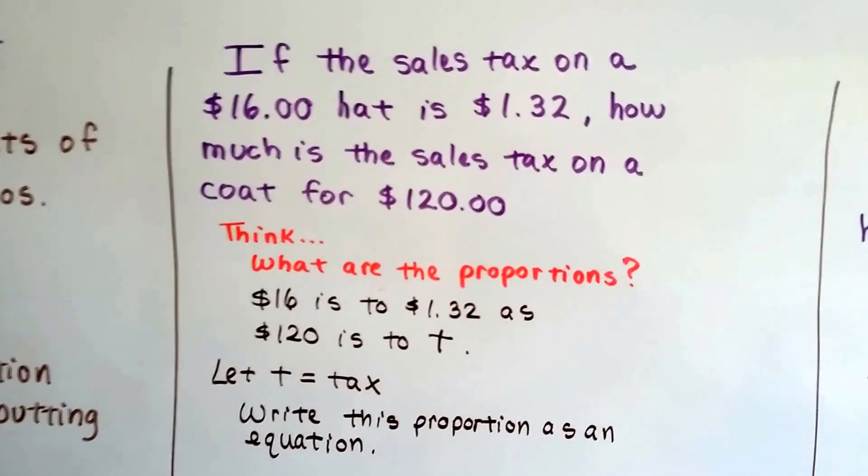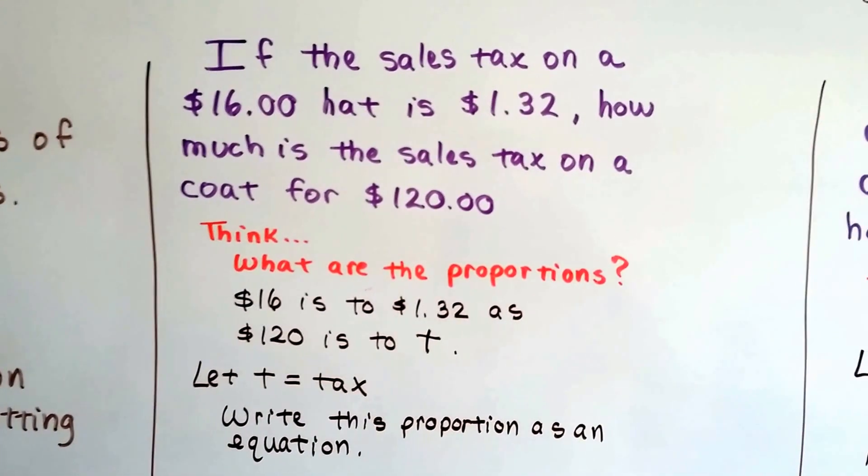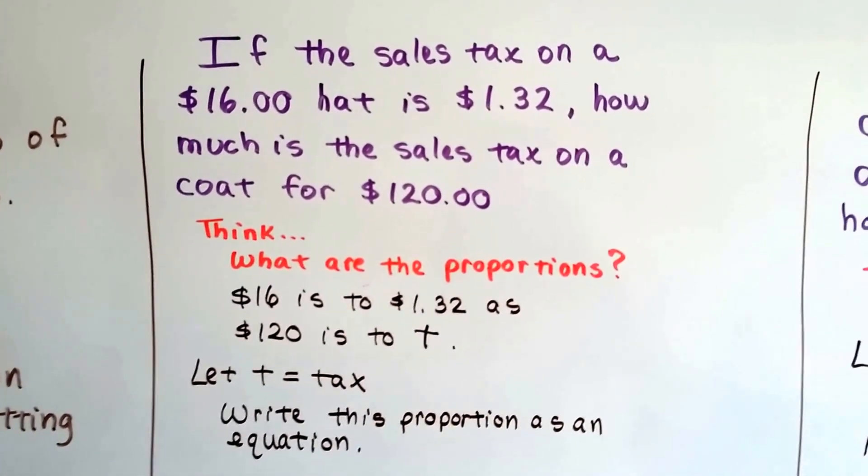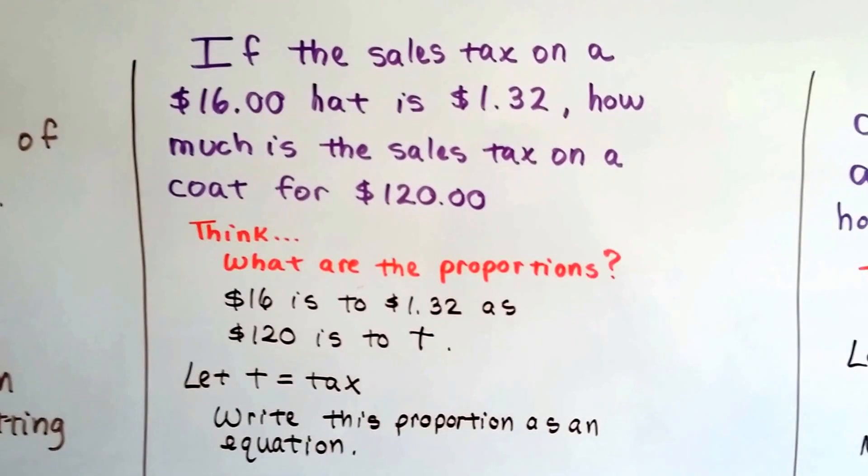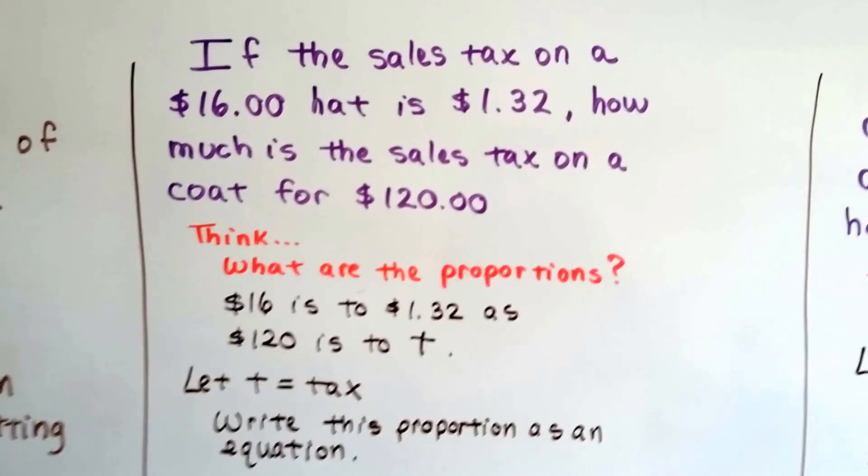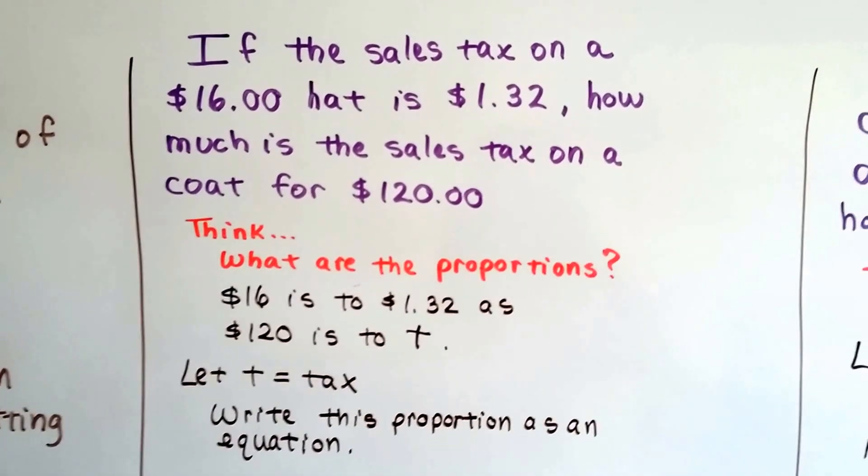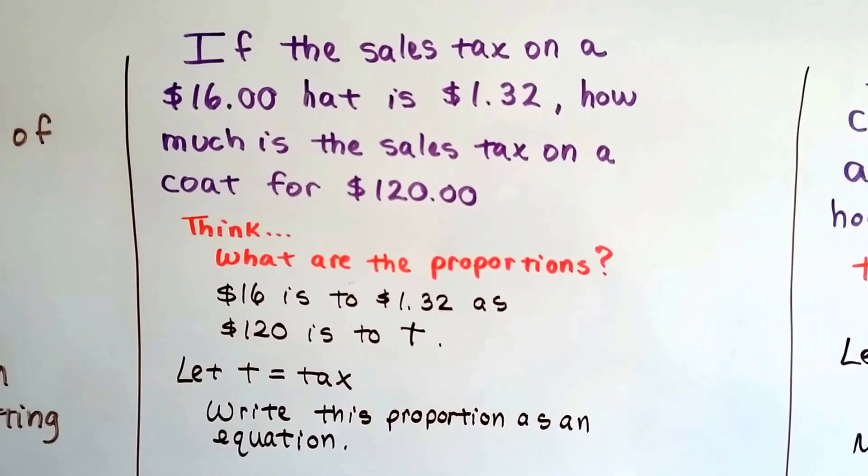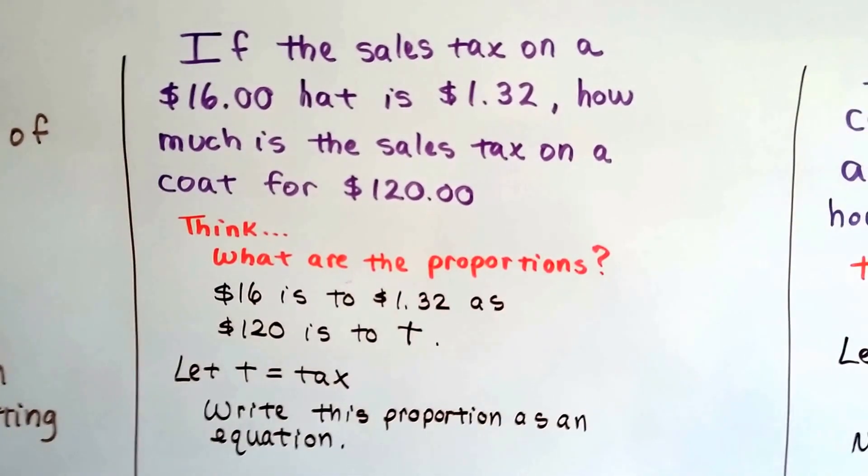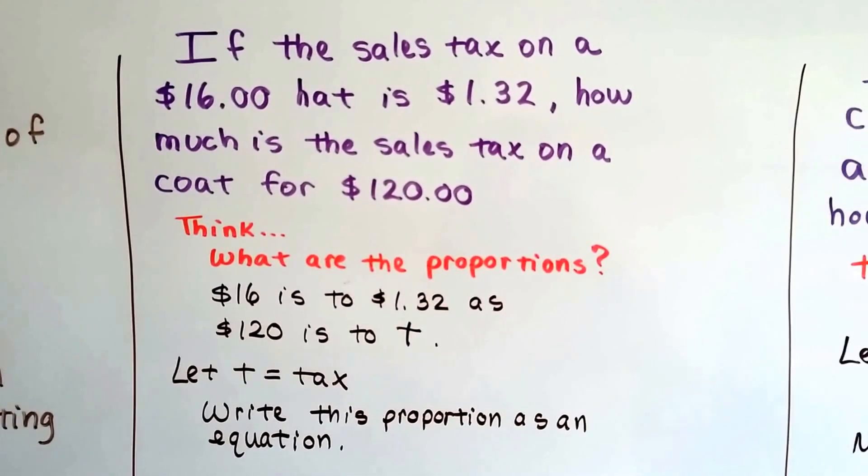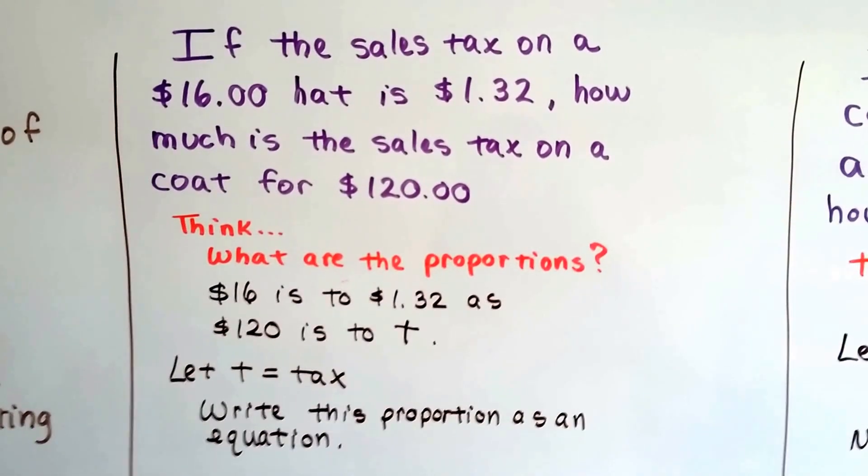If the sales tax on a $16 hat is $1.32, how much is the sales tax on a coat for $120? So we think, what are the proportions? Well, $16 is to $1.32 as $120 is to a variable. So we'll let T equal the tax on the $120 coat.